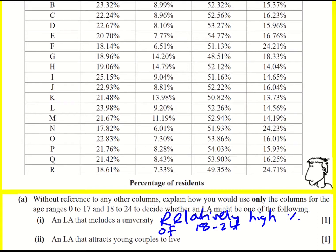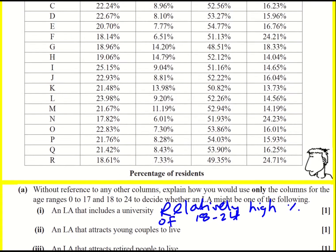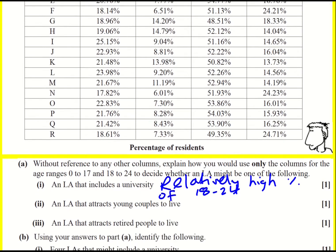What is it about these two columns that might show whether a local authority attracts young couples to live? Well, that's going to be a relatively high proportion of both, because they might start a family and have a young child, or they might be say 23 to 24 as a couple themselves.